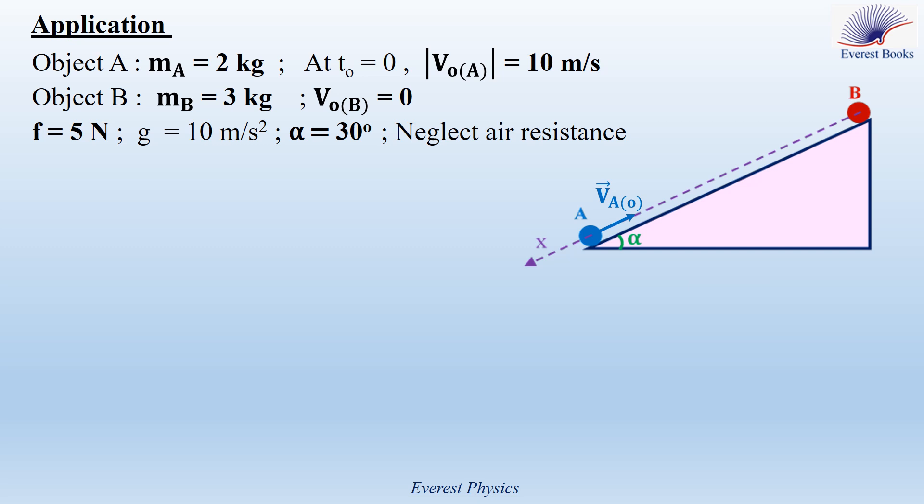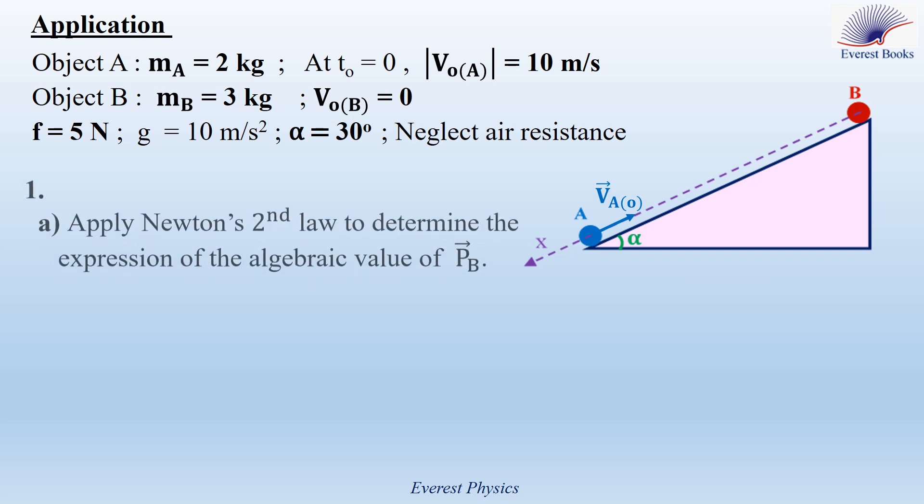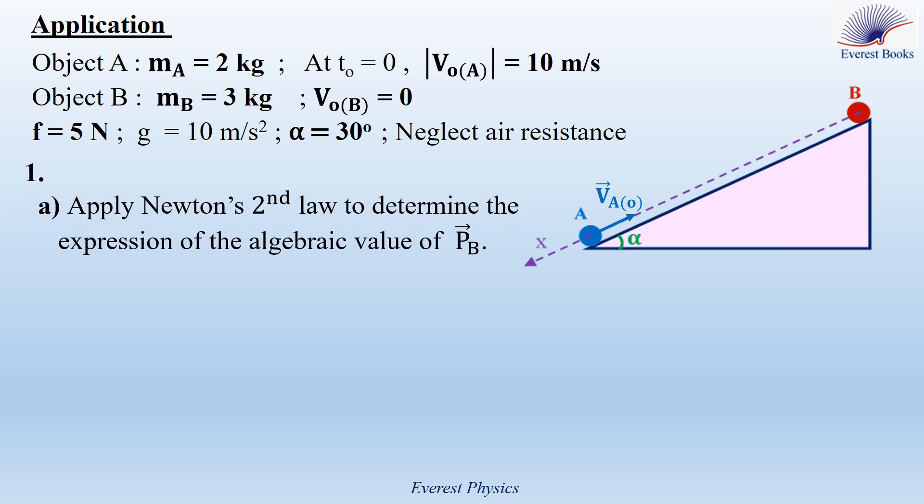We will take the gravitational acceleration as 10 m/s² and neglect air resistance. Let's start with part 1.